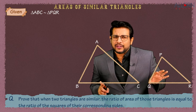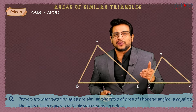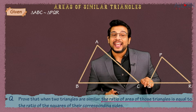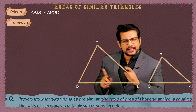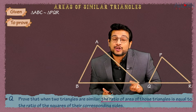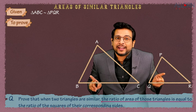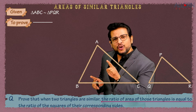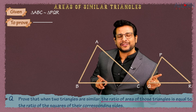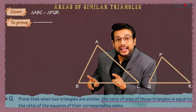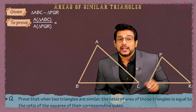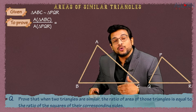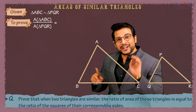Now, the next question is: what are we supposed to prove? When two triangles are similar, we need to prove that the ratio of the areas of these two triangles is equal to certain ratios. So in 'To Prove' we write: area of triangle ABC upon area of triangle PQR is equal to the ratio of the squares of their corresponding sides.